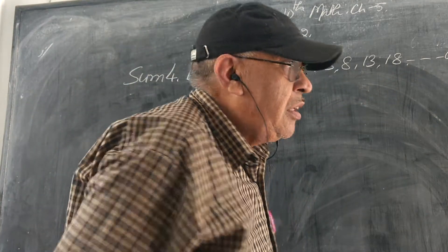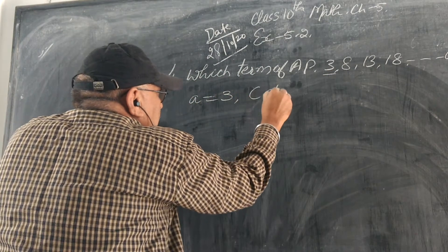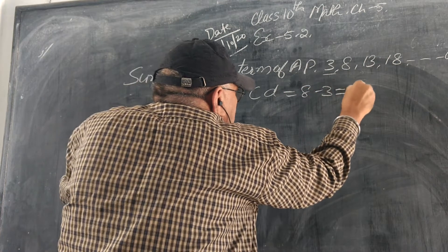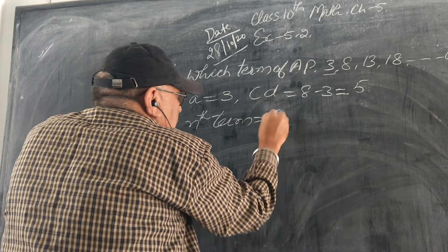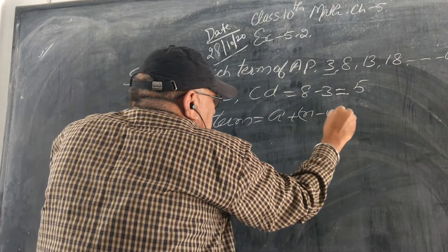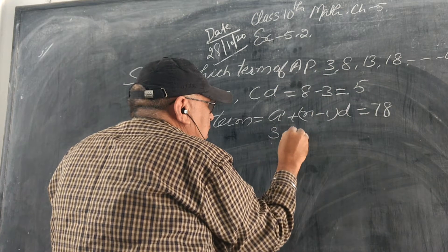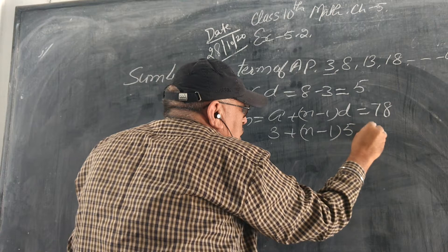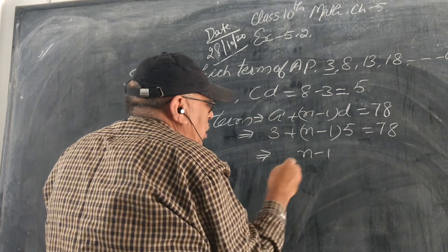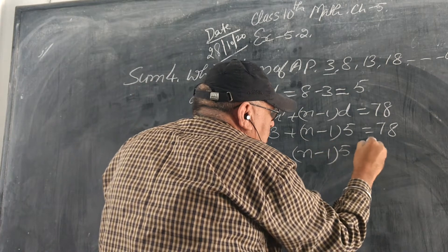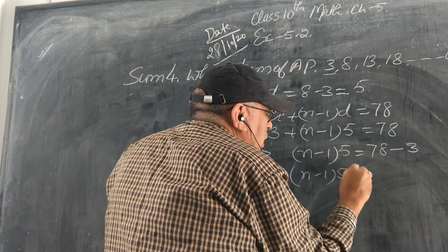The first term is 3, and the common difference is 8 minus 3, which is equal to 5. So the nth term formula gives us: 78 equals 3 plus n minus 1 multiplied by 5. Therefore, n minus 1 multiplied by 5 equals 78 minus 3, which equals 75.